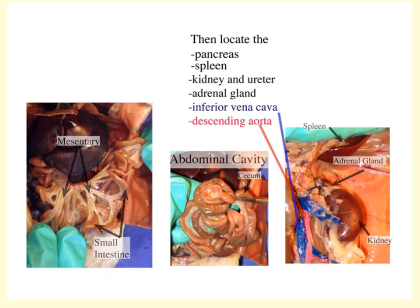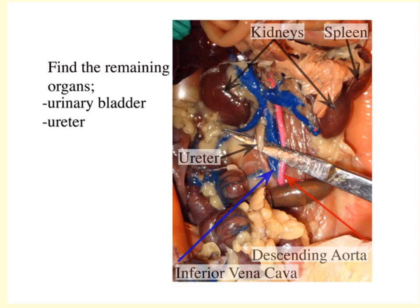The mesentery is the thin tissue that holds the organs in place and is easily seen between the small intestines. The kidney sits with the adrenal gland on top; notice its location relative to the spleen. The kidneys are retroperitoneal — behind the peritoneal cavity. The main vein of the body is the inferior vena cava, and the main artery is the abdominal aorta. Running from each kidney down to the urinary bladder is the ureter.